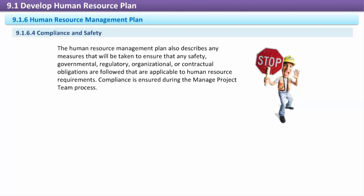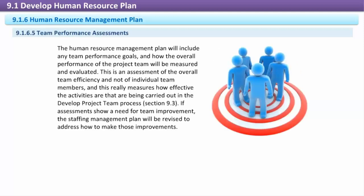Compliance and Safety: The Human Resource Management Plan also describes any measures that will be taken to ensure that any safety, governmental, regulatory, organizational, or contractual obligations are followed that are applicable to human resource requirements. Compliance is ensured during the Manage Project Team process. Team Performance Assessments: The Human Resource Management Plan will include any team performance goals, and how the overall performance of the project team will be measured and evaluated. This is an assessment of the overall team efficiency and not of individual team members, and this really measures how effective the activities are that are being carried out in the Develop Project Team process (Section 9.3). If assessments show a need for team improvement, the staffing management plan will be revised to address how to make those improvements.